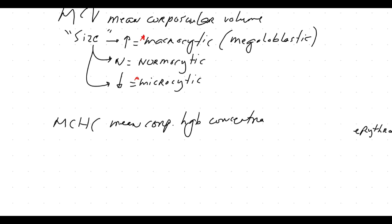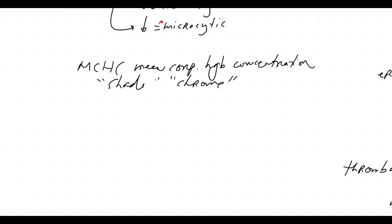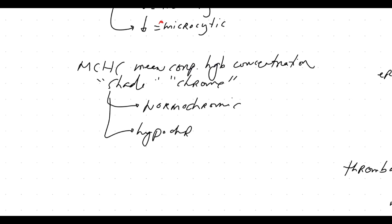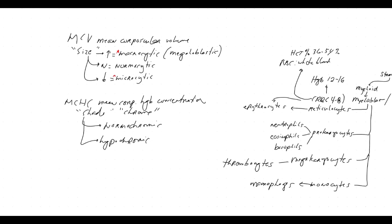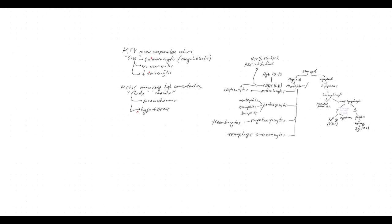There's also the MCHC — mean corpuscular hemoglobin concentration — which has to do with the shade or chromacity of the cell: how deep is the red? When pertaining to MCHC, we either say the cell is normochromic, or it's a hypochromic cell, which means it's pale. Typically your microcytic RBCs are the ones that are also hypochromic. These match the microcytic category.